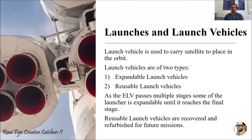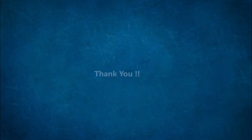After a few repairs and modifications, these vehicles are used again for future missions. This process of repairing and modifying is called refurbishment. So reusable launch vehicles, after launching the satellite into orbit, are retrieved back to Earth, refurbished if necessary, and used again for future missions — unlike expendable launch vehicles.